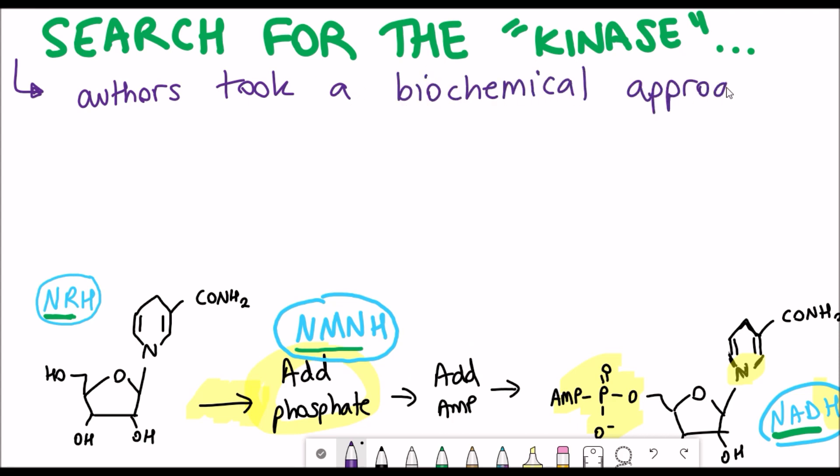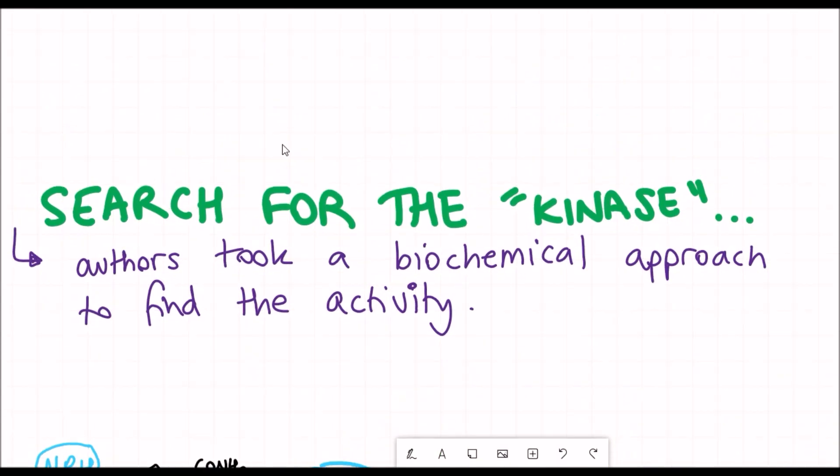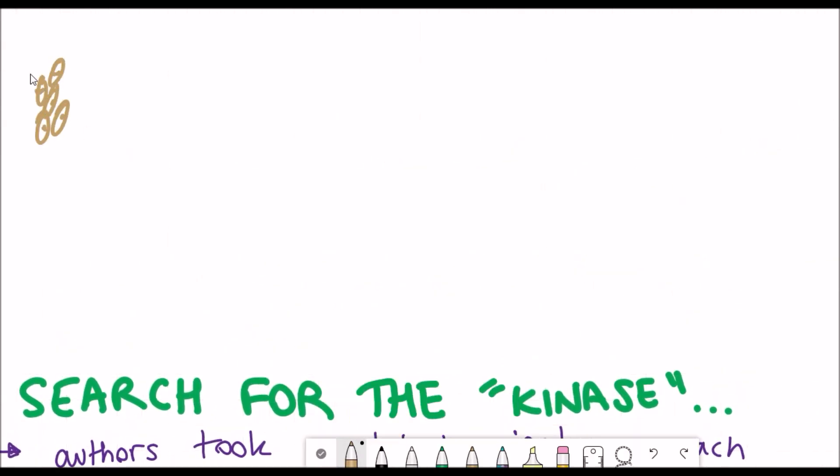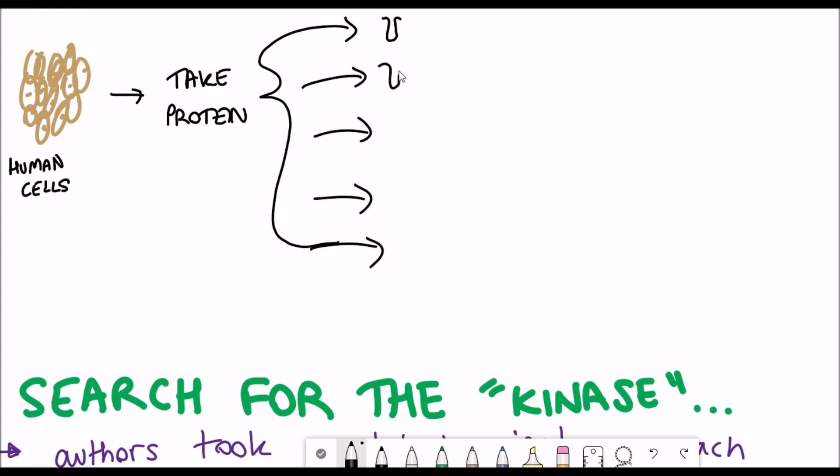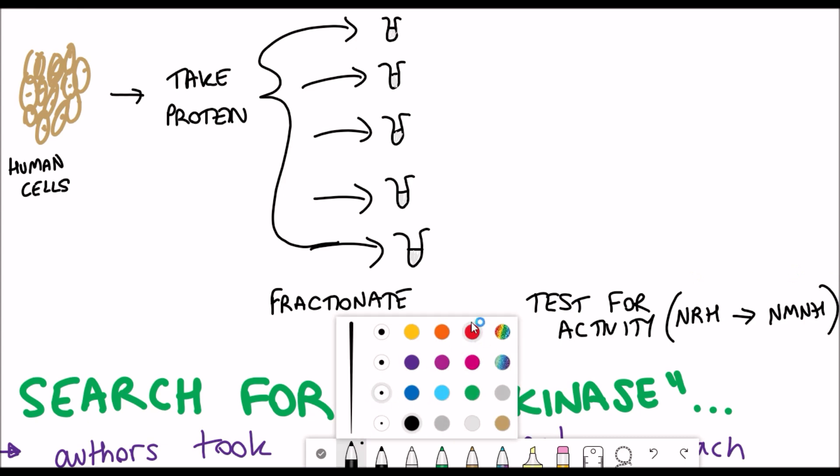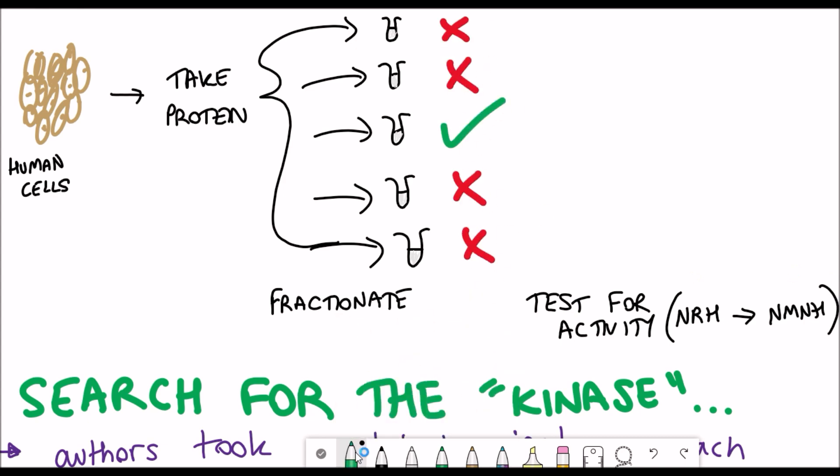To identify the specific kinase involved in this reaction, the authors took a proper biochemistry approach, and what that basically means is you have your cells and you extract the proteins from it, and then you can fractionate these proteins based on their charge and also their size, and then you can do an assay for each of these different fractions to see which one has the activity that we're looking for.